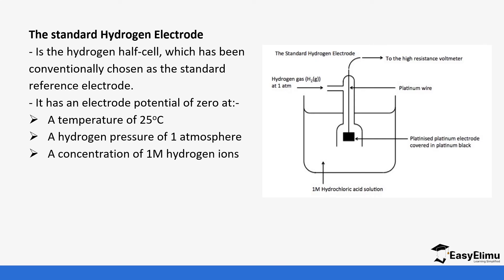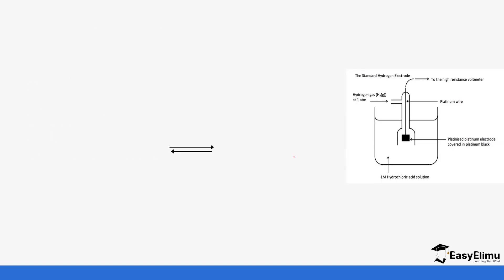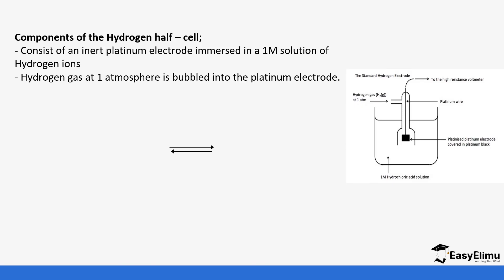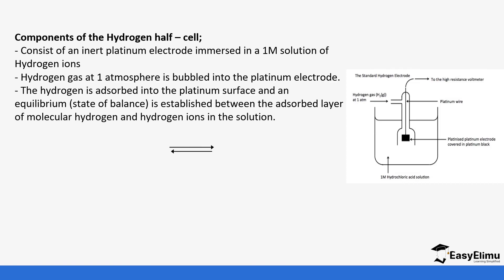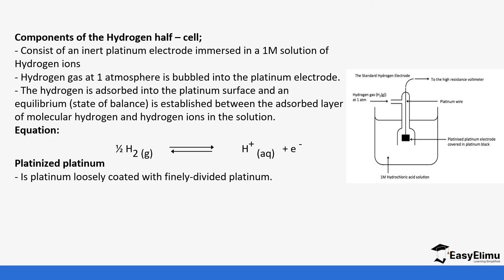In the standard hydrogen electrode setup, hydrogen is bubbled at one atmosphere into a solution of hydrochloric acid with a concentration of one molar at 25 degrees Celsius. You can see we have the platinum electrode. The hydrogen gas is bubbled into the platinum electrode and is absorbed into the platinum surface. Equilibrium is established between the absorbed layer of molecular hydrogen and the hydrogen ions in solution — the hydrogen goes into solution and forms hydrogen ions, losing electrons.